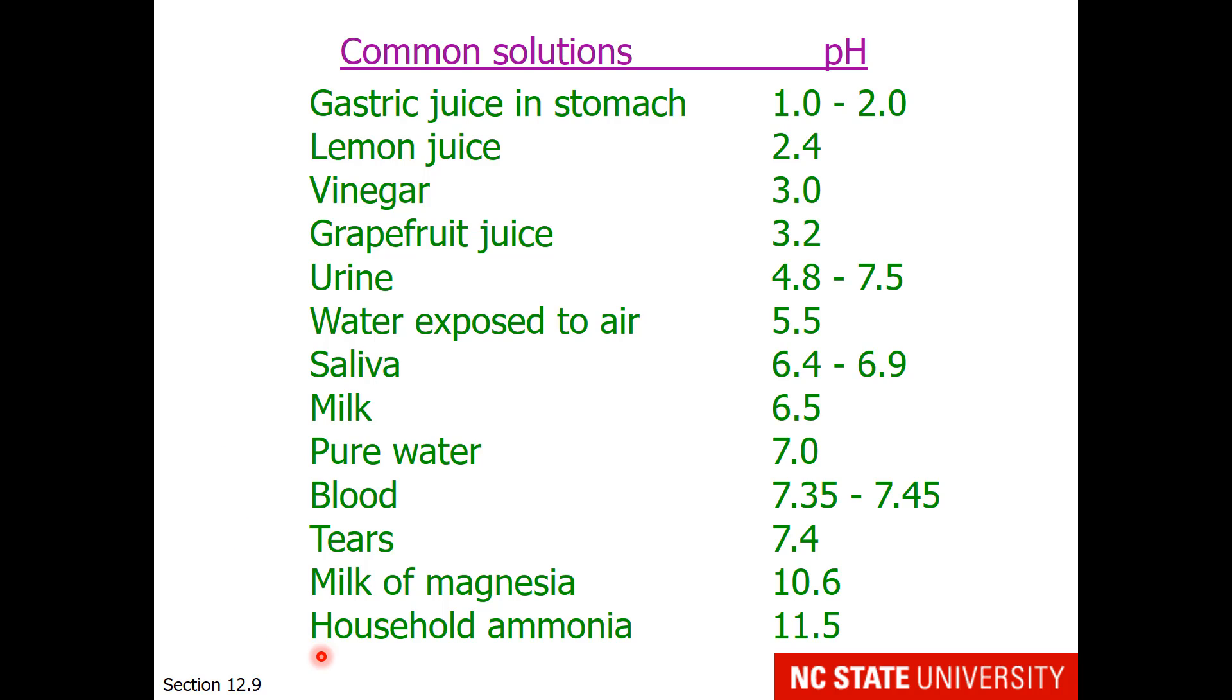Here is a list of pHs of some common materials. I'm sure you realize your stomach is very acidic. You notice that very sour things like lemon juice, vinegar, and grapefruit juice are also acidic. Water exposed to air absorbs carbon dioxide to give carbonic acid and an acidic pH. Your saliva is a little bit acidic as well, as is milk.